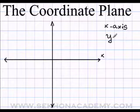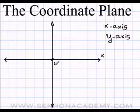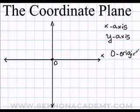These two axes divide the plane in four important regions. We will talk about them later. The intersection point between these two lines is the origin, or zero.